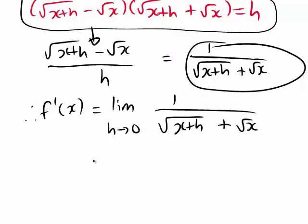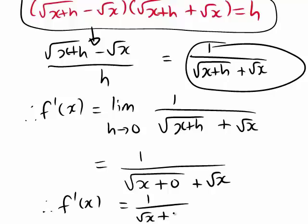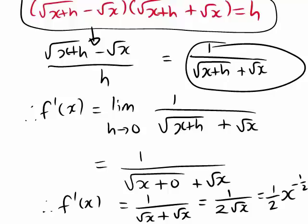Now if we substitute in h equals 0, we get 1 divided by the square root of x plus 0 plus the square root of x. That gives us f'(x) equals 1 divided by the square root of x plus the square root of x, which is 1 divided by 2 times the square root of x. In index form, you could also write this as one half times x to the negative one half. So that is the third example of using differentiation by first principles.